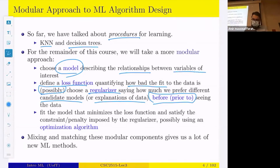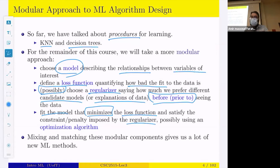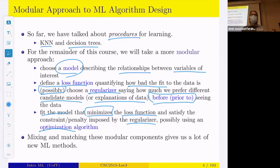Another component is the optimizer: once we define a model and loss function, we fit the model by minimizing the loss function subject to constraints and penalties imposed by the regularizer, often using an optimization algorithm. By mixing and matching these modular components, we get many different machine learning algorithms — changing the model from linear to something more complex gives us neural networks; changing the loss function gives something like support vector machines.